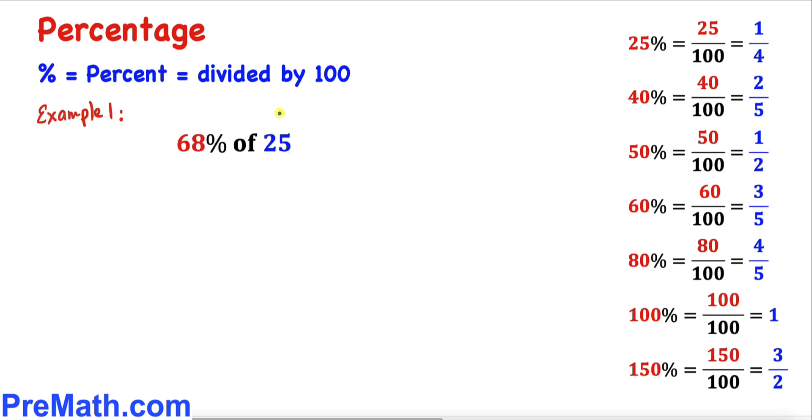Here are some more examples. Let's look at this very first example: 68 percent of 25. Just keep in your mind that in mathematics 'of' means multiply.